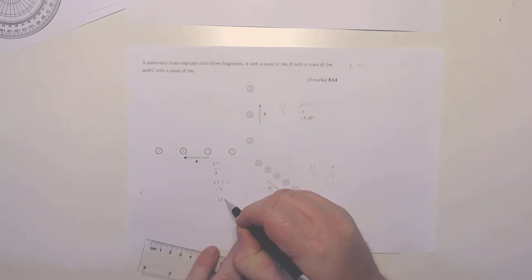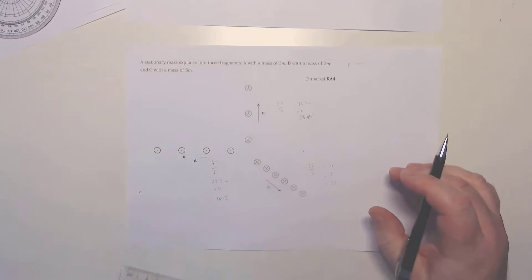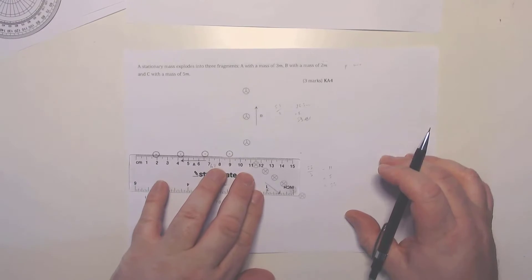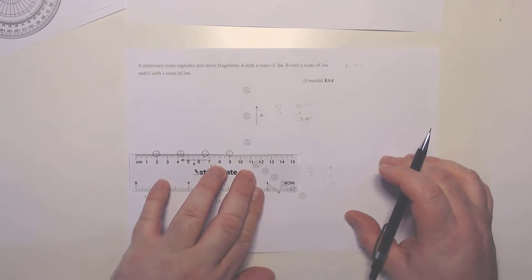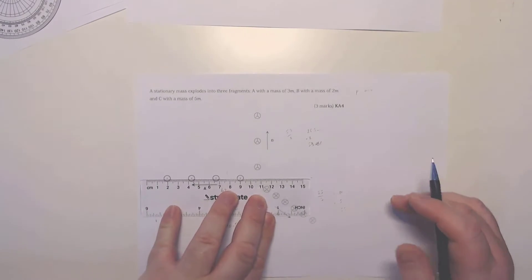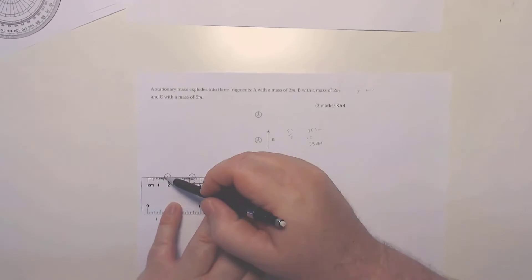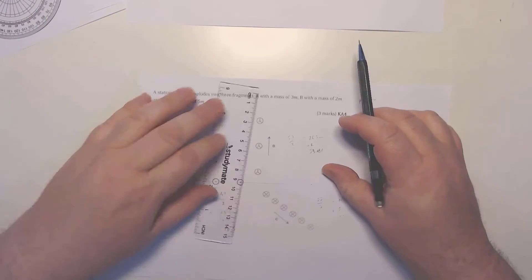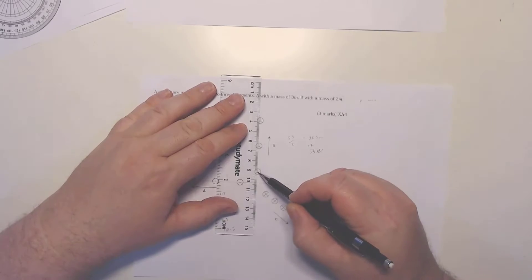And of course, mass A has a mass of three times, so times that by 3 and I'll end up with 70.5. Okay, so now I need to do the vector diagram, so I'm going to have to add in the angles in which those momentum vectors are.